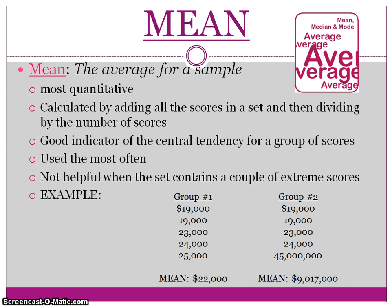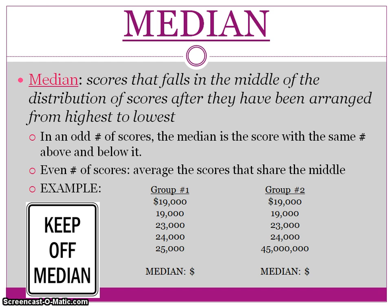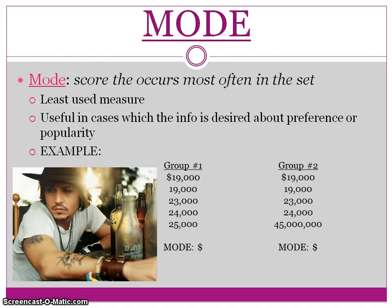However, mean is not very helpful when we see an extreme score, such as in group two. If that data set represents incomes, you can see Steven Spielberg there with 45 million dollars — that skews the mean significantly. So we use median instead. Median is the score that falls in the middle once the scores have been arranged from highest to lowest. This is essentially a better way of getting the overall picture of the data. We can see that the median in both groups is twenty-three thousand dollars.